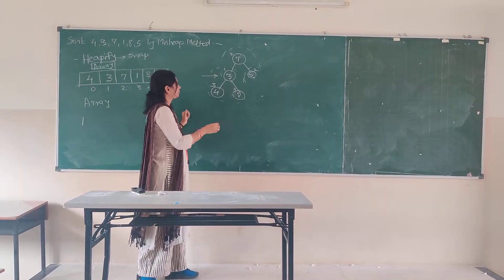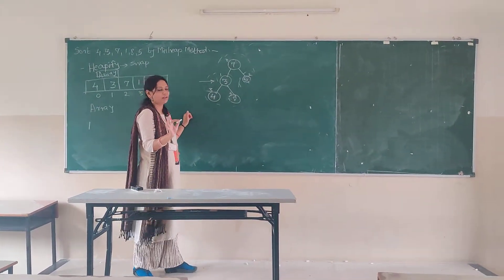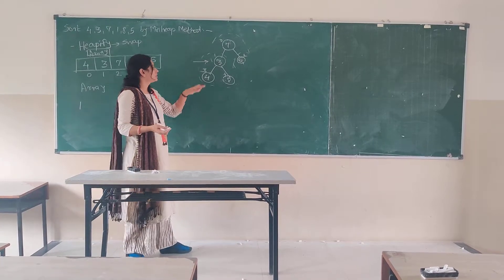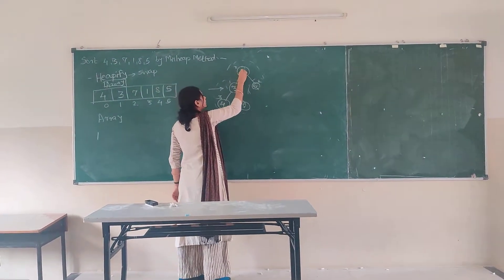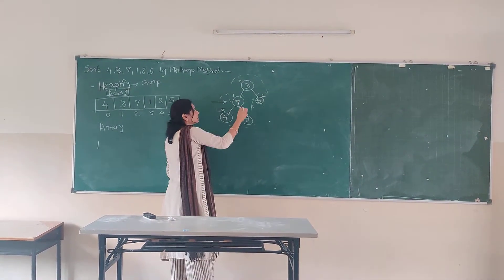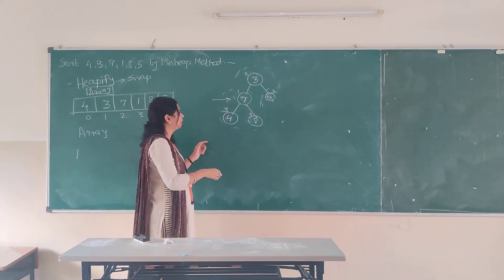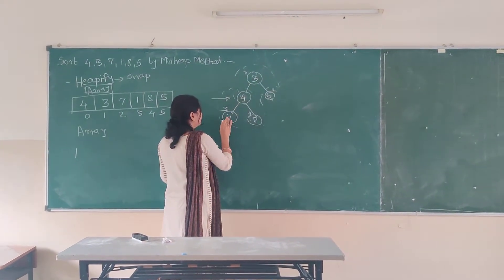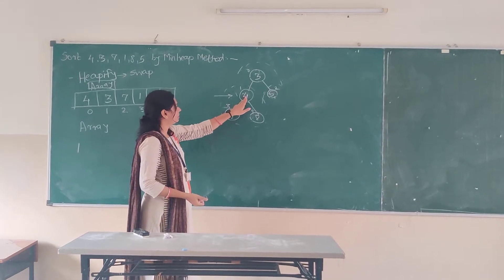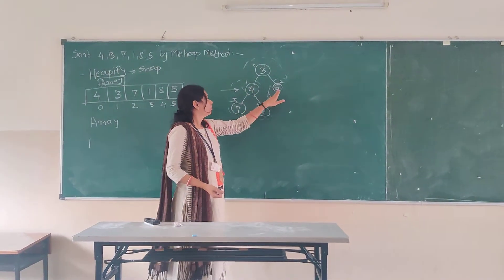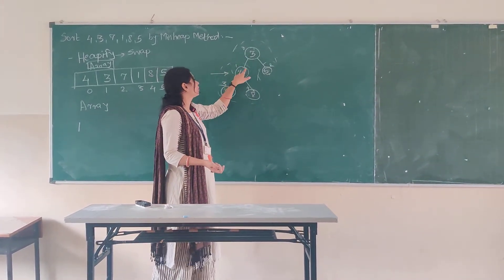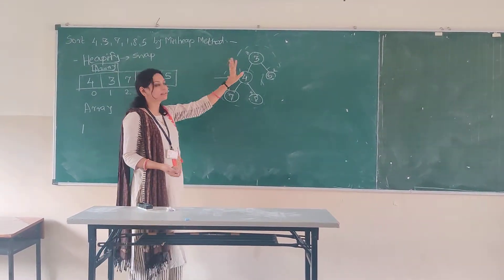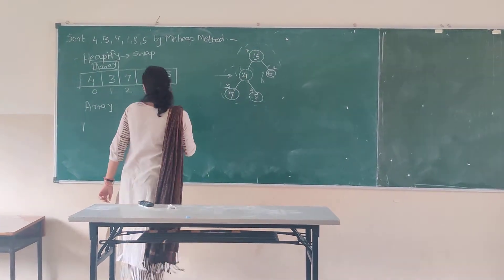Again we do the comparison. 3 is less than 4 and 8, so 4 is the smaller child. We do swapping: 3 comes here and 7 goes there. Now checking further — nodes 4, 8, and 7: we swap so 4 comes here and 7 goes there. Since the parent 5 is less than child, and checking 3, 4, and 5 — 3 is less than the child nodes. We can say this is now the complete balanced tree.